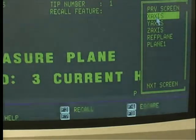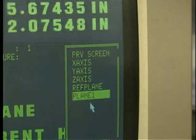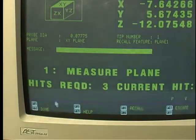A list appears that includes the stored plane 1 values previously entered. Click on plane 1. Now plane 1 appears as the recalled feature. Then click done.